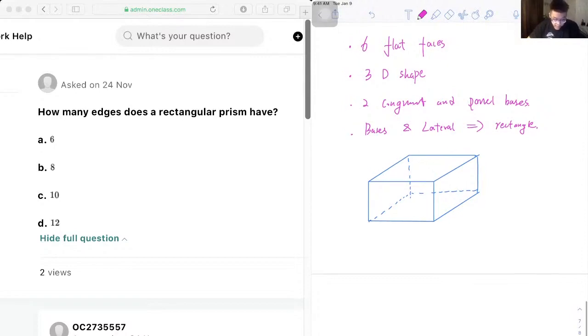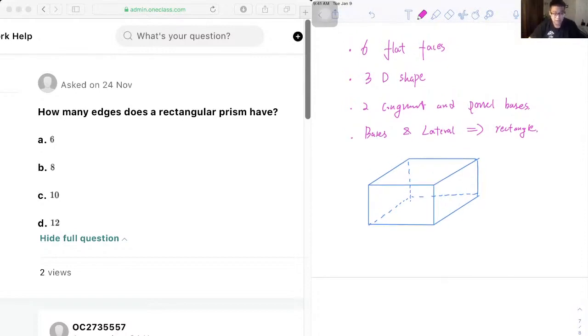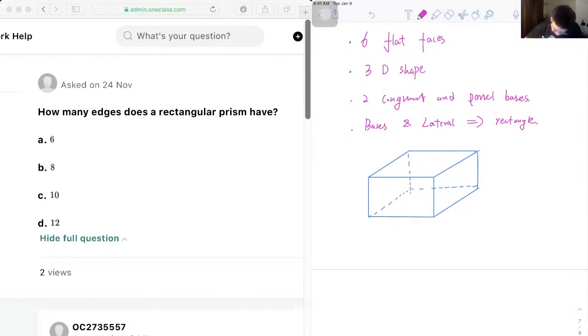Therefore, either from the imagination or from the diagram, we know that the rectangular prism has a total of 12 inches. So our answer should be D.